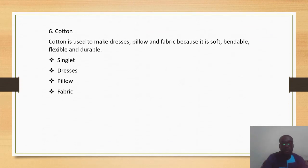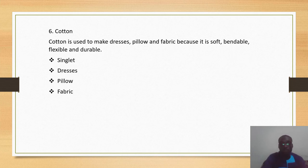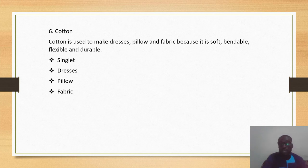Cotton is used in making dresses, pillows, and fabric because it is soft, bendable, flexible, and durable. So cotton can be used in making things like singlets, dresses, pillows, and fabrics.